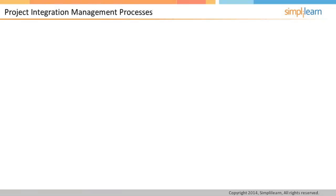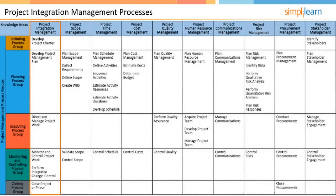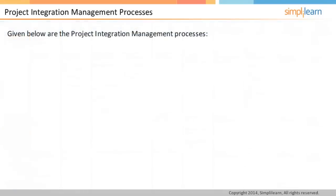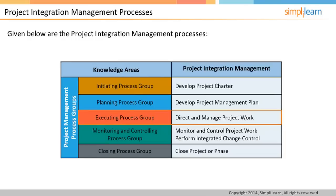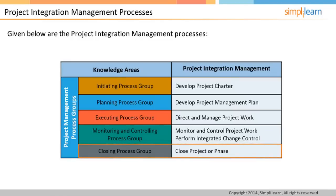There are six project management processes which are part of the project integration management knowledge area: develop project charter done in the initiation process group, develop project management plan undertaken in the planning process group, direct and manage work carried out in the executing process group, monitor and control project and perform integrated change control in the monitoring and controlling process group, and close project or phase done in the closing process group.